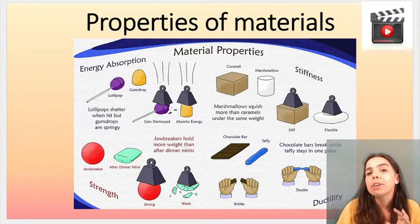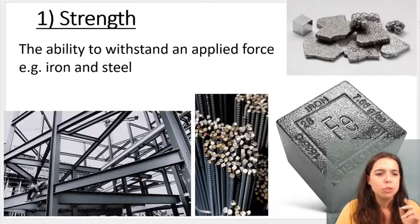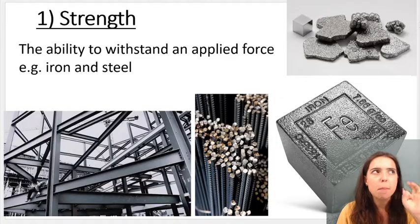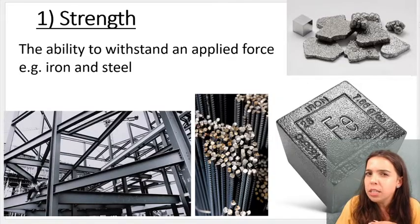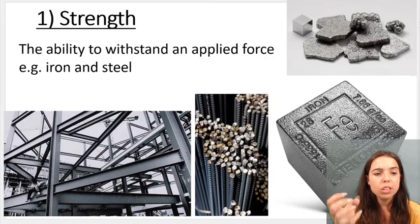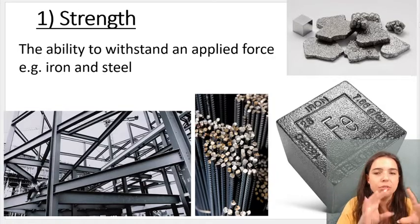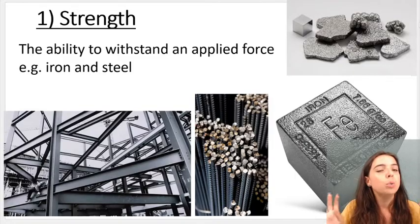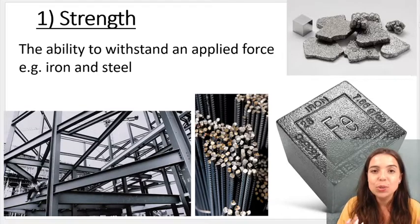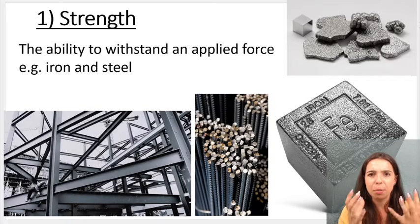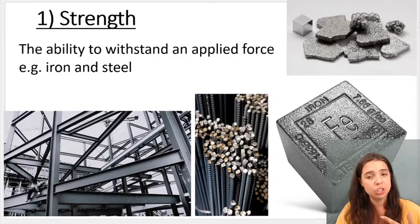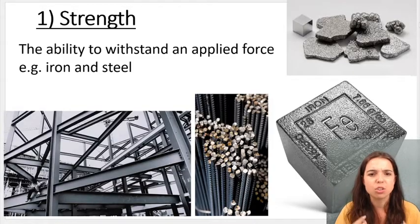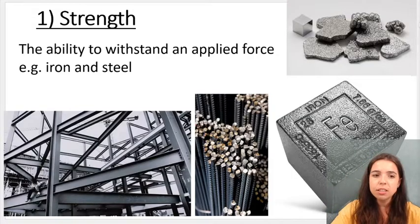We're going to speak about specific properties of materials and matter, namely: strength, thermal conductivity, ductility, malleability, electrical conductivity, boiling point, and melting point. These properties can be used to describe and differentiate types of matter. You need to know how to define and explain these terms. Strength is the ability to withstand an applied force — for example, iron (Fe) and steel are strong materials.